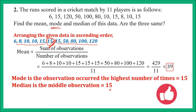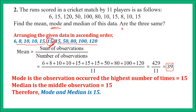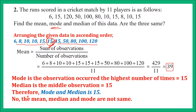Are the three same? Mean is 39, mode is 15, and median is also 15. So mode and median are same, both being 15. But mean, median, and mode are not all the same. The three values are not same. I hope you understood. Let us go to the next question.